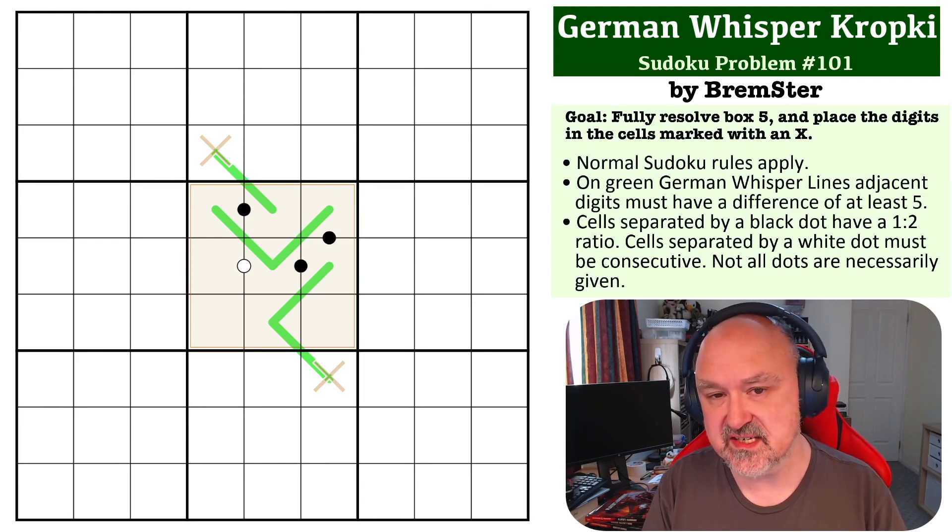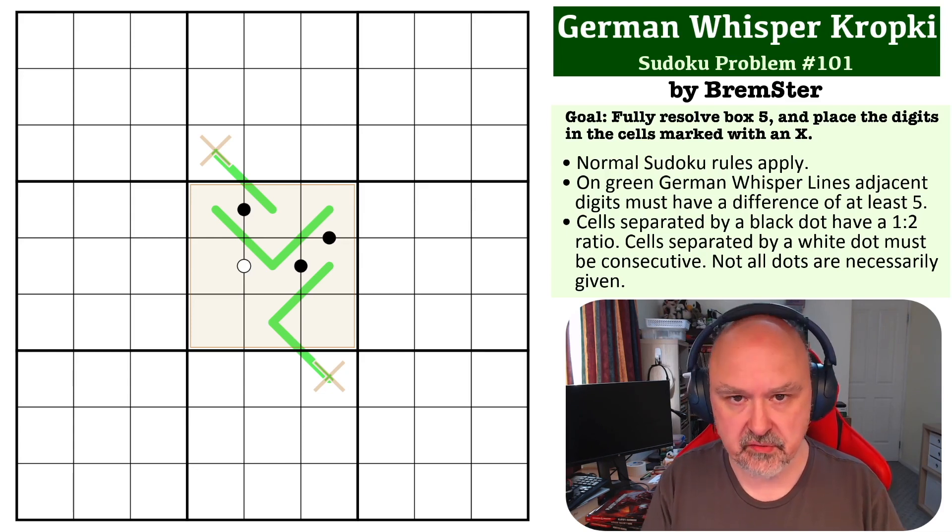The goal on this one is to fully resolve box 5 as well as place the extra digits in the cells marked with an X. There is a link below where you can get a copy of the grid to try for yourself.